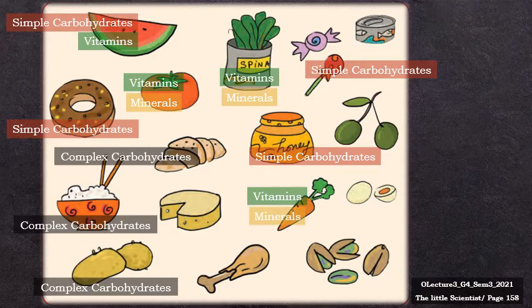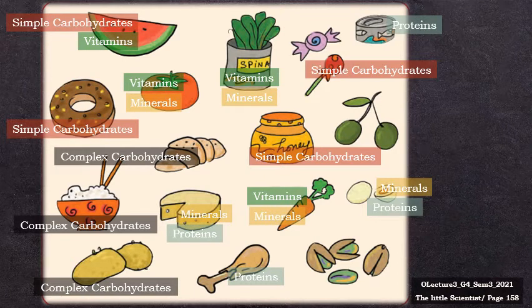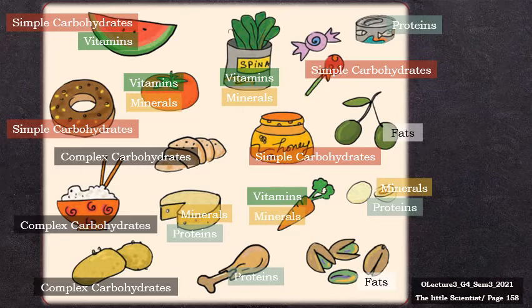Vitamins and minerals are usually found in fruits and vegetables. Fish, eggs, chicken, and meat are rich in proteins. Here is the tuna rich in proteins, the eggs too, the cheese is made out of milk so it is rich in proteins, and the chicken also. Milk and eggs provide us with calcium, so they have minerals in them. And the olives and the pistachio are rich in fats. Fats provide us the energy we need to perform different activities.